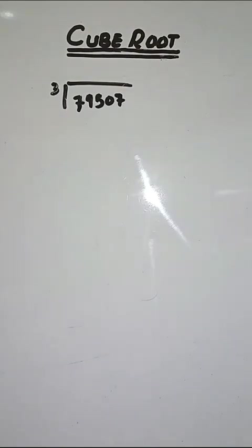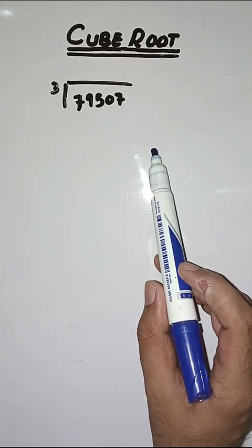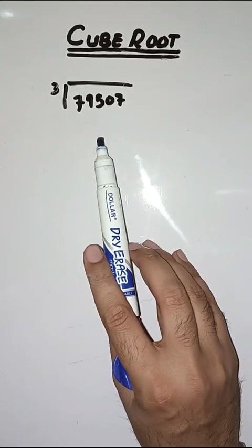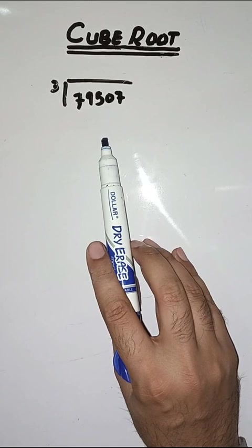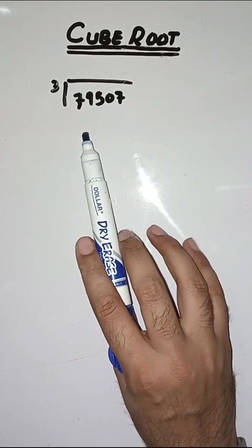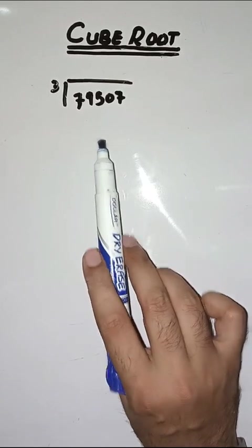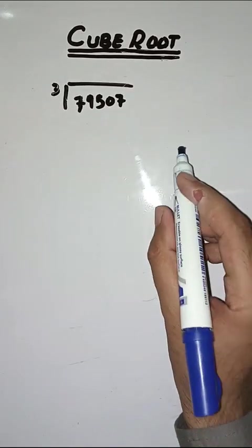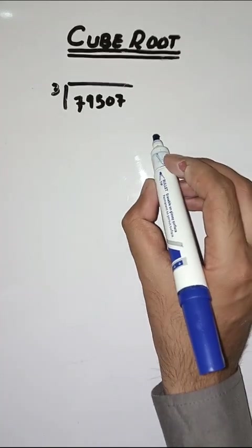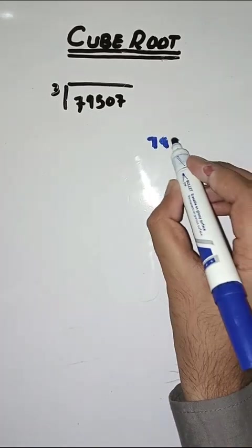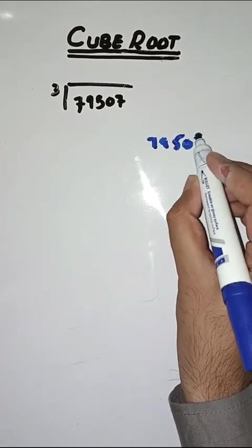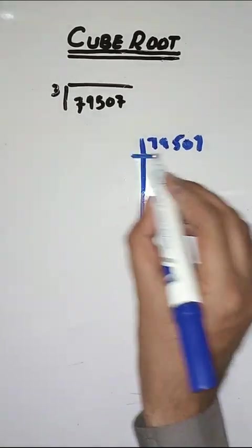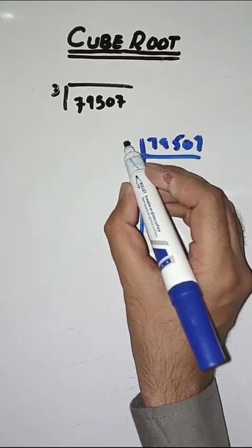Assalamu alaikum students, hope you all are fine. Today we will learn how to find cube root. We have to find cube root of 79507. The first step is to find the prime factors of this number, so we start with 79507.